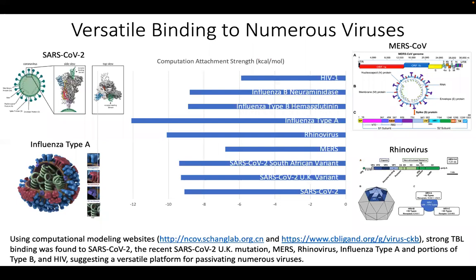We've also looked at other viruses. One of the problems with COVID-19 was that we didn't have a versatile molecule that could work for all different viruses. We wanted to develop that so we're better suited for the next mutation or the next virus. We looked at how well our molecule attaches to MERS, rhinovirus (the common cold), influenza, HIV, and others. In each virus we've looked at, we are seeing strong attachment, covering the virus and keeping it from replicating.